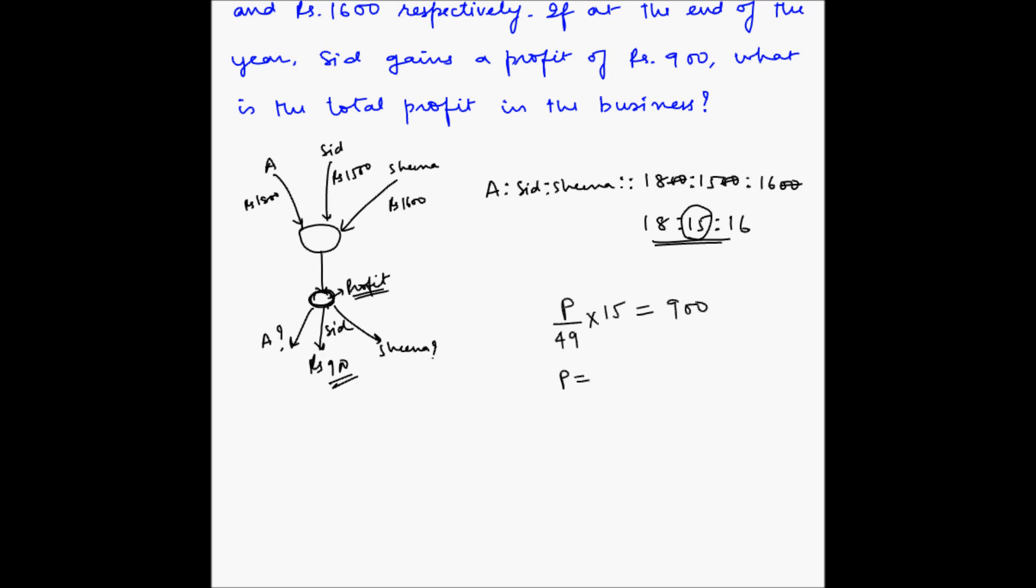So P is equal to now 49 we will take on the other side. So since this is in the denominator and is division, it will go in the numerator with multiplication. So 900 multiplied by 49 and 15 is in the numerator. So it will go in the denominator. And since it is multiplied by, so it will go as divided by 15. Now 15 ones are 15 and 15 six are 90 and one zero.